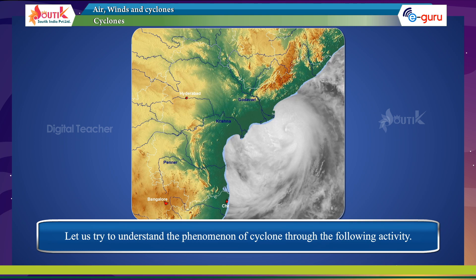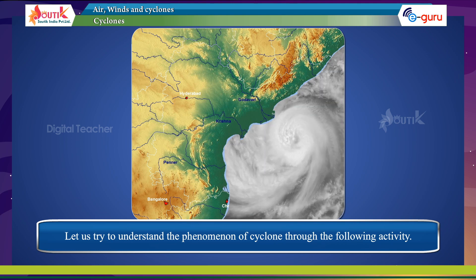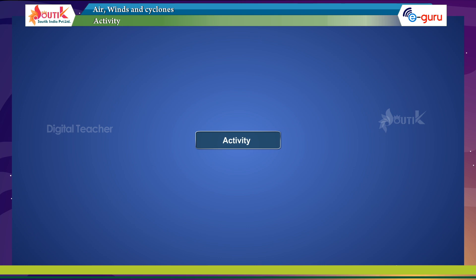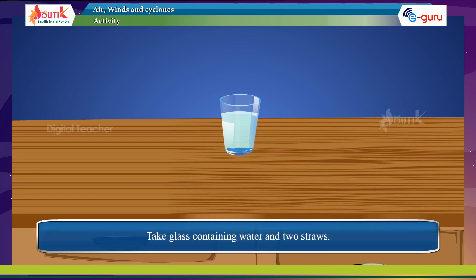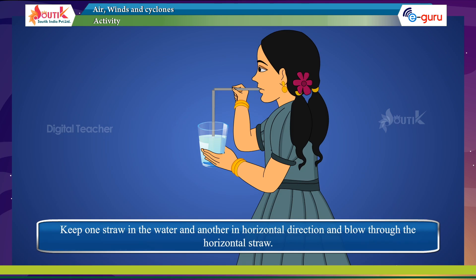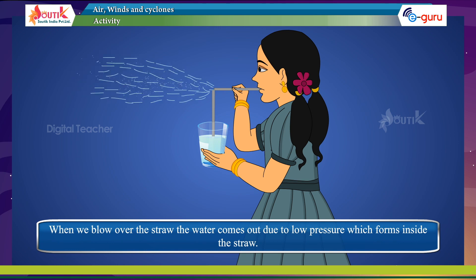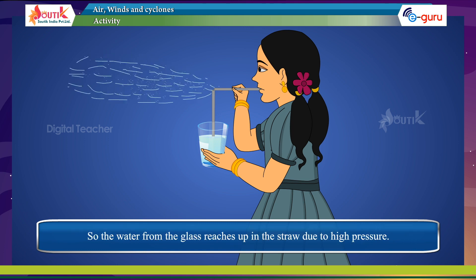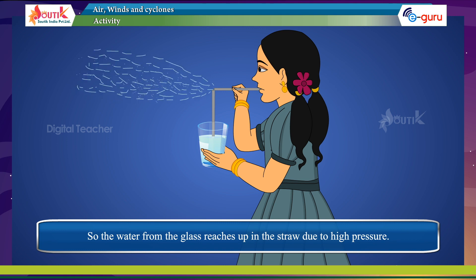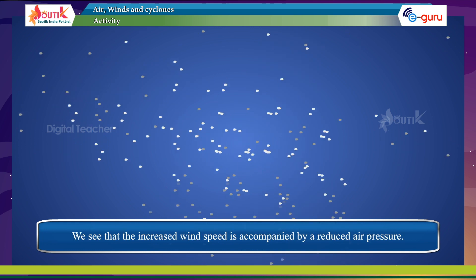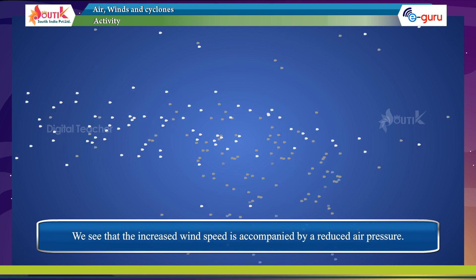Let us try to understand the phenomenon of a cyclone through the following activity. Take a glass containing water and two straws. Keep one straw in the water and another in a horizontal direction and blow through the horizontal straw. When we blow over the straw, the water comes out due to low pressure which forms inside the straw. So, the water from the glass reaches up in the straw due to high pressure. We see that increased wind speed is accompanied by reduced air pressure.